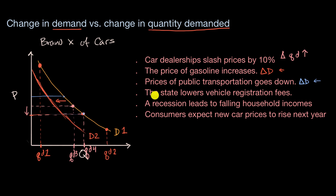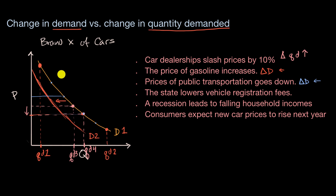Here we say the state lowers vehicle registration fees. Regardless of where we might be sitting along the demand curve now, if registration fees go down, the total cost of ownership of a car has gone down. So for any given price, people might be able to demand a little bit more car. Here we would have a shift of the demand curve to the right — we could call this D3. So we have a change in the entire demand curve, going to the right.